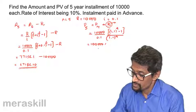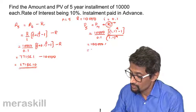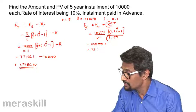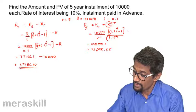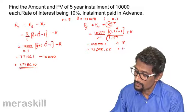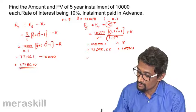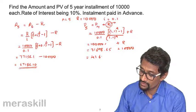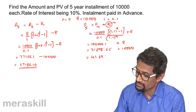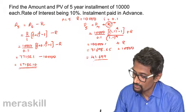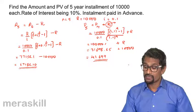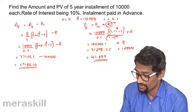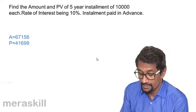This works out to around 31,698.65, and of course plus R, so plus 10,000, which turns out to be 41,698.65 — that is 41,699 — which should be the present value of these installments.